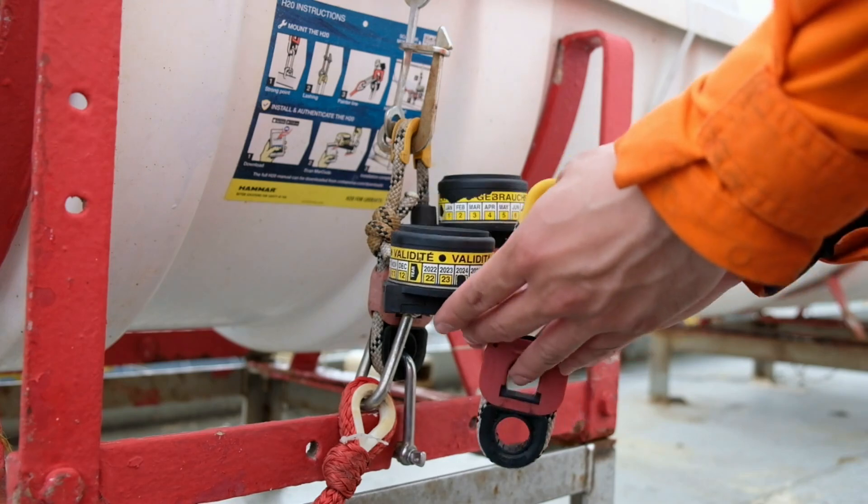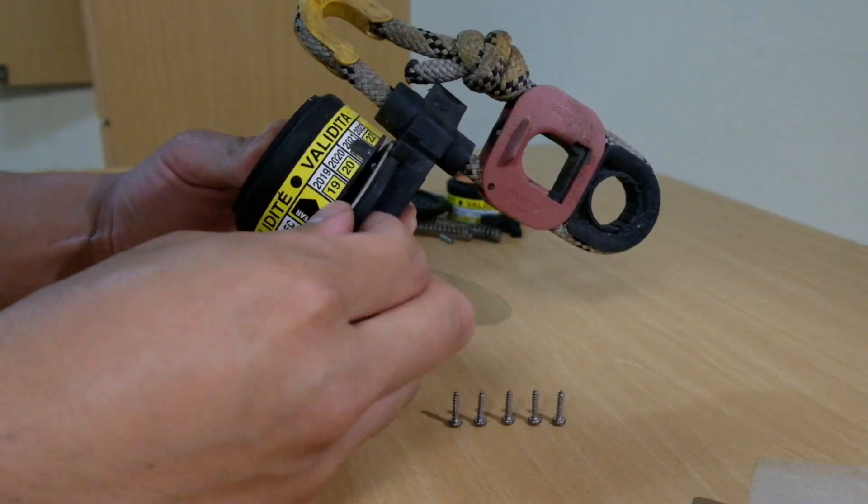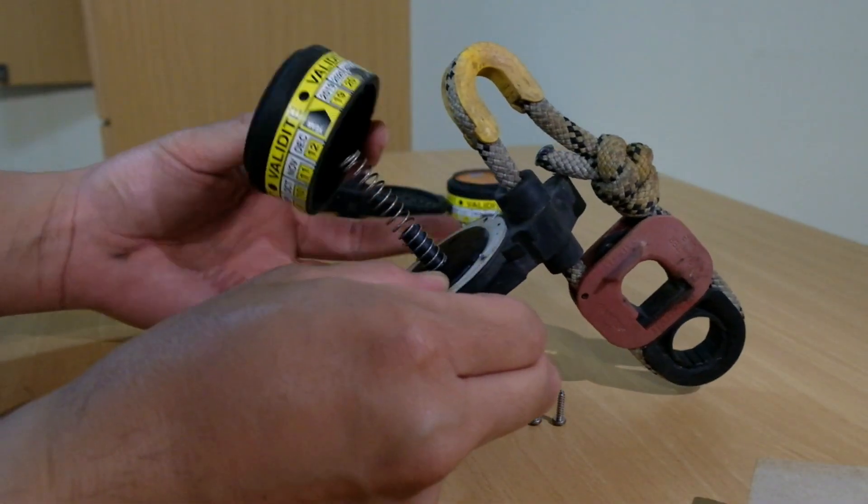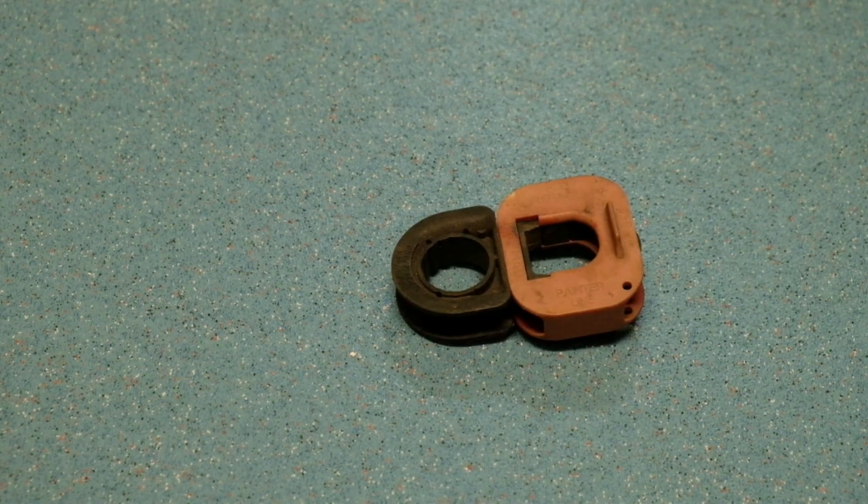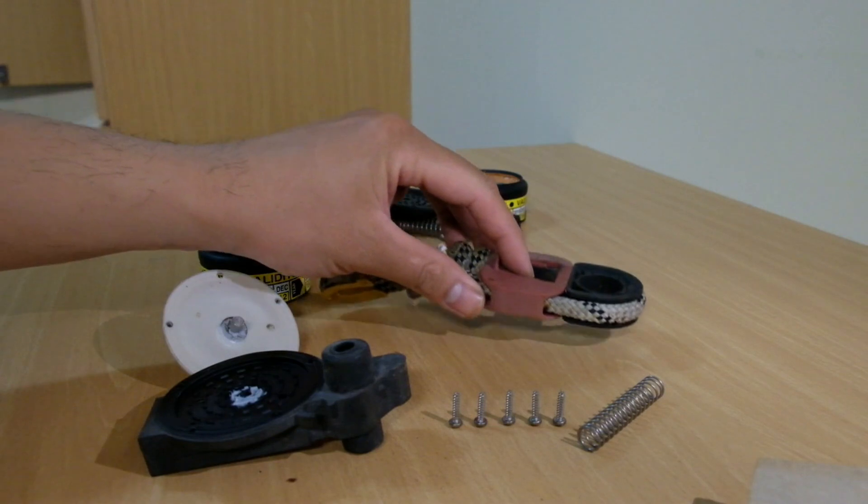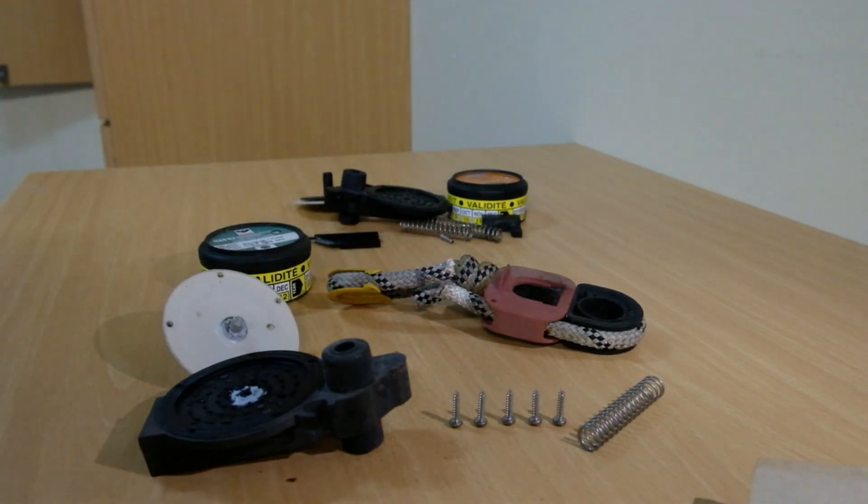But how do we maintain this device? What's inside this unit? How does it trigger its release mechanism? What's a weak link? How does it work? Well stick around because in this video, we'll go through all that there is to know about the HRU. Let's go!